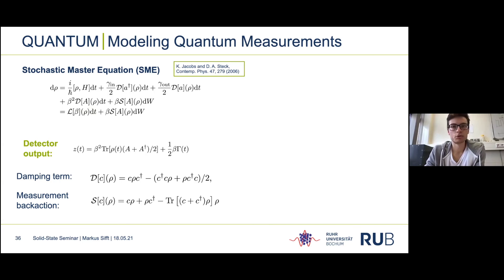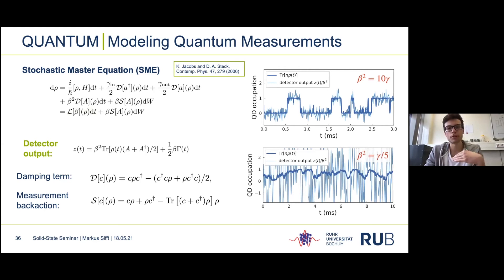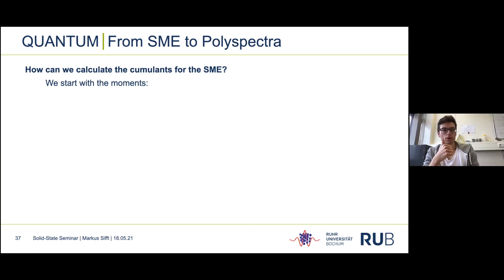For the case that β is much larger than the tunneling rates we get telegraph-like switching as many are familiar with. However, for β much smaller than γ we get a trace dominated by white noise. So how do we go from the stochastic master equation to polyspectra? We have to do two things: first we calculate the moments, then build the cumulants. These formulas for moments beyond the second order have been known since 2018 and are quite intuitive.